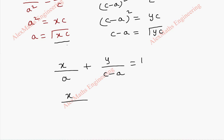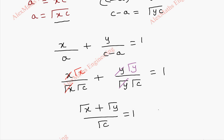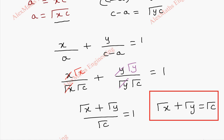We take our first equation x/a + y/(c-a) = 1 and replace: x/√(xc) becomes √x/√c, plus y/√(yc) becomes √y/√c, equal to 1. By cancelling, we get √x and √y in the numerators. Finally, taking the common denominator √c and cross-multiplying, we get √x + √y = √c. This is our required equation of the envelope.